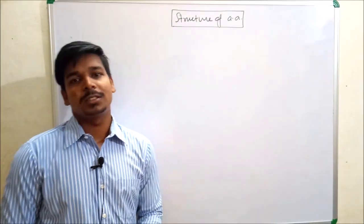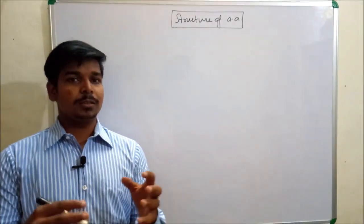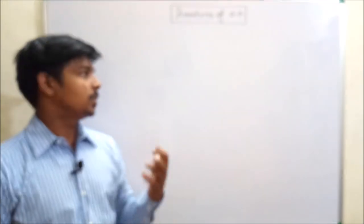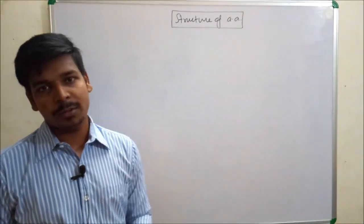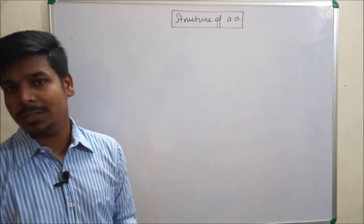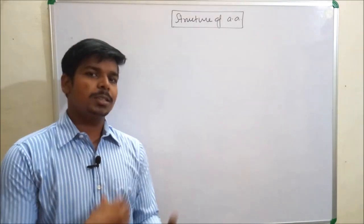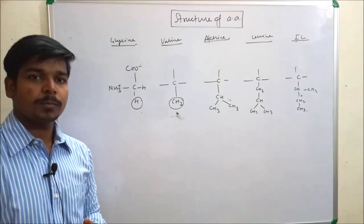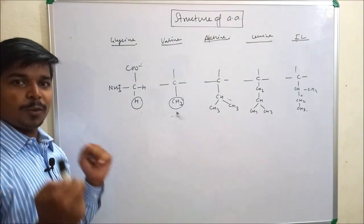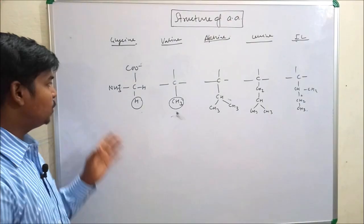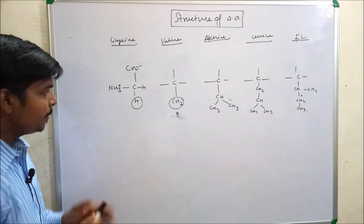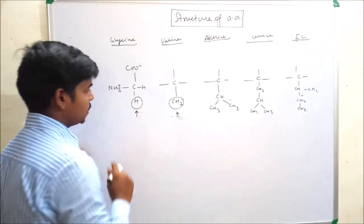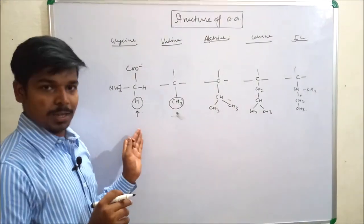Let's see the structure of amino acids. There are 20 standard types of amino acid and two non-standard types: selenocysteine and pyrrolysine. The simplest structure of an aliphatic amino acid is glycine, in which the R group is H.